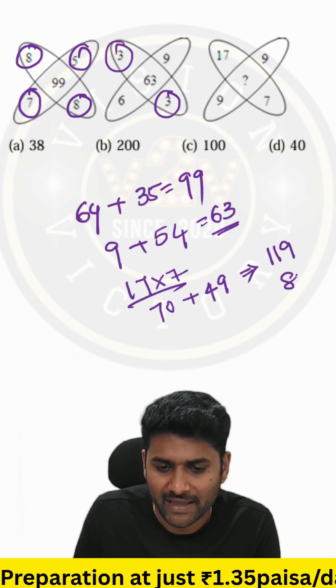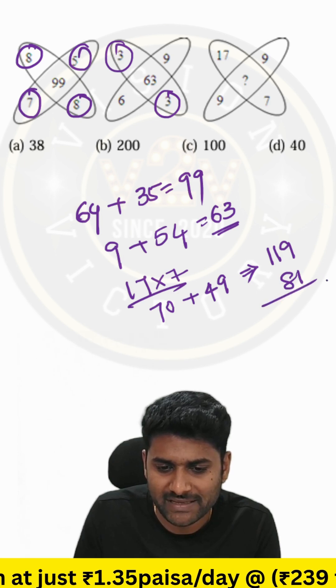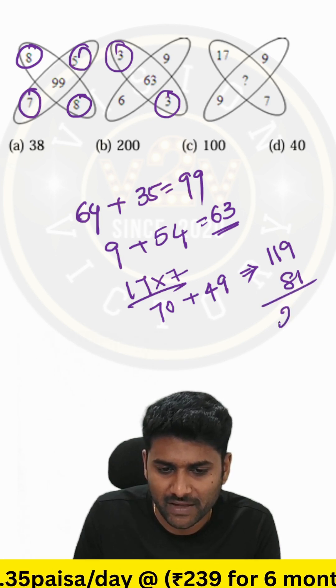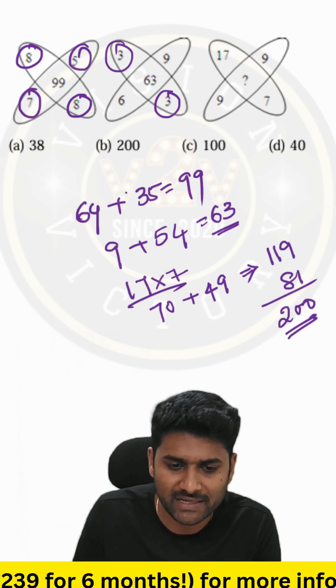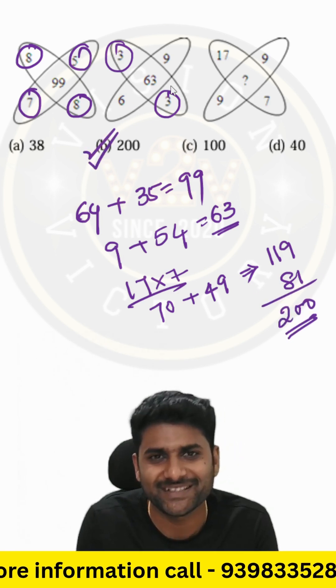Same way, 9 into 9 is 81. If you go through the overall resultant, the answer is 200.